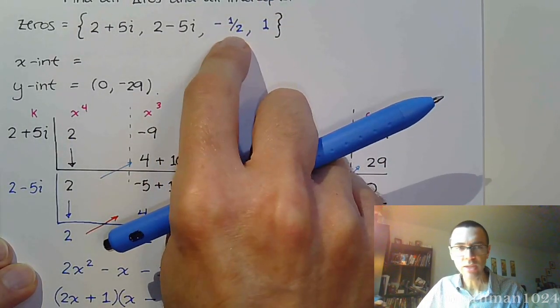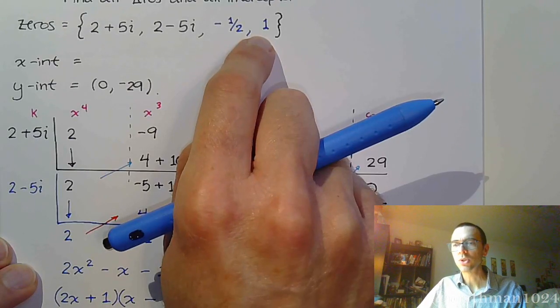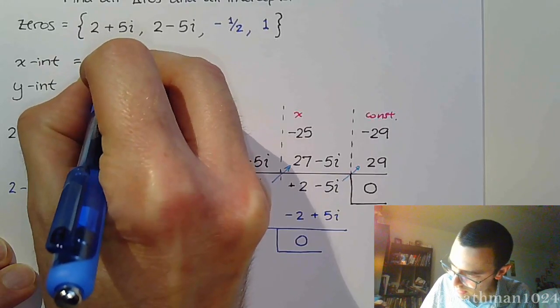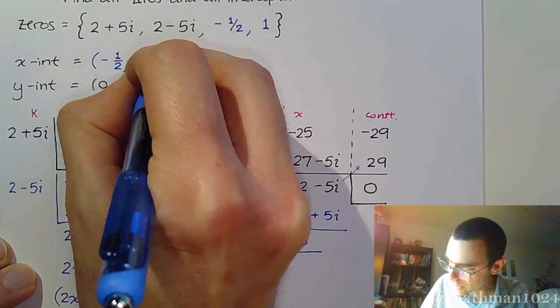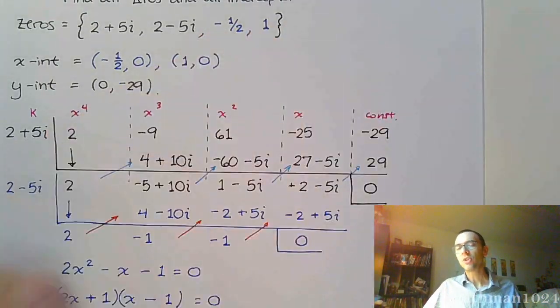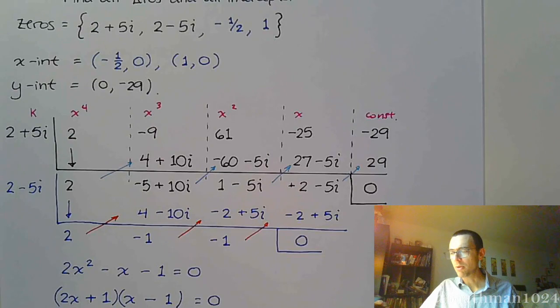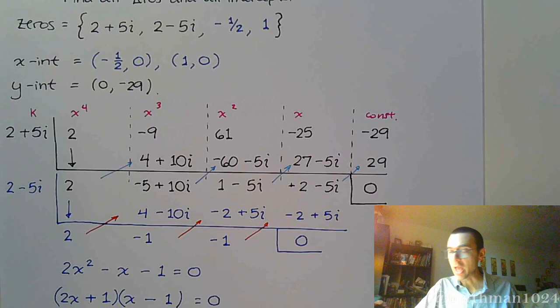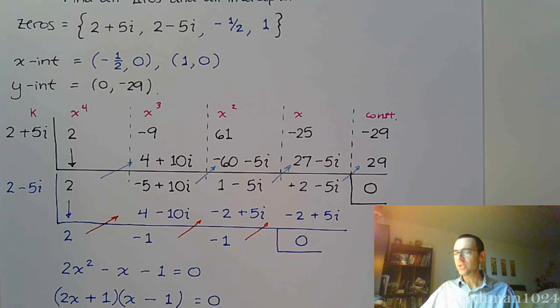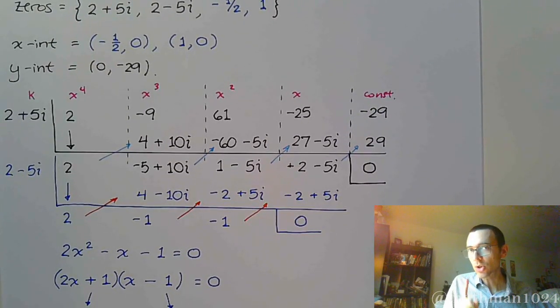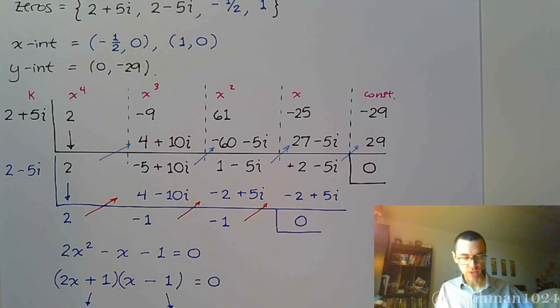So, our zeros, we have -1/2, and we have positive 1. Since both of these are real, each one is going to correspond to an x-intercept. So, we get (-1/2, 0), and we get (1, 0). So, even though we had four zeros, only two of those guys were real, so we only get two x-intercepts. And then we got the y-intercept.